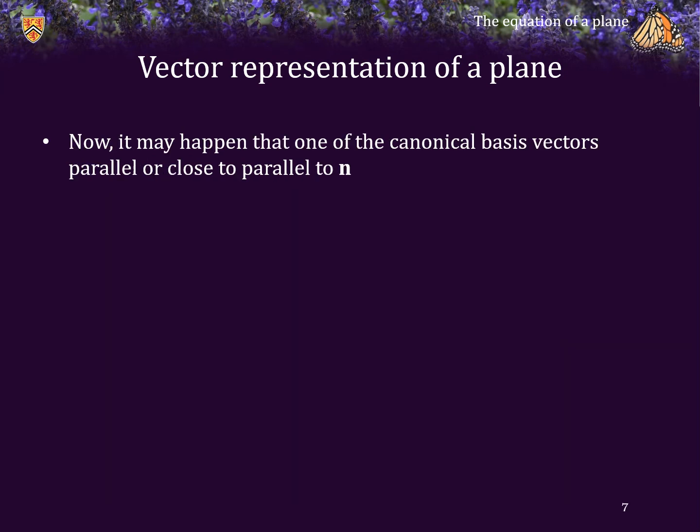Now, it may happen that one of these canonical basis vectors will be parallel, or very close to being parallel to the normal vector, in which case, one of them could actually be very, very small in its 2-norm.